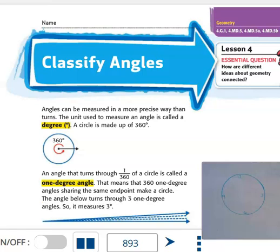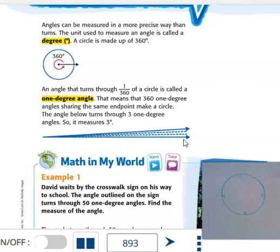The angle below turns through three one-degree angles, so it measures 3 degrees. It started out and opened up one, two, three.